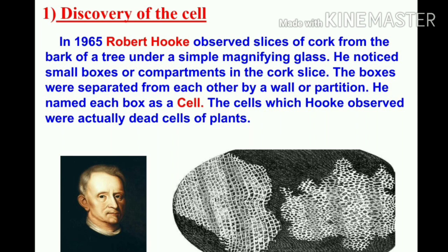The cells which Hooke observed were actually the dead cells of plants, because he took the bark — the outermost layer — which is a set of dead cells. The cells of living organisms could be observed only after the discovery of the improved microscope. Very little was known about the cell for the next 150 years after Robert Hooke's observation. Today we know a lot about cell structure and function because of improved microscopes with very high magnification.